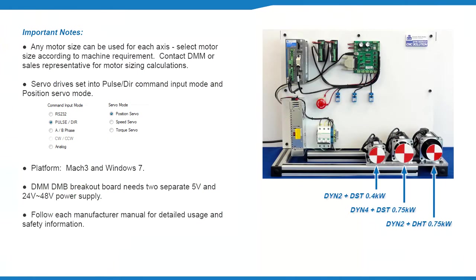Any motor size can be used for each axis and the user should select this according to their machine requirement. In this video, we will be using a 3-axis system with 1 DYN4 and 2 DYN2 servo drive axes. Make sure all servo drives are set into pulse direction command input mode and position servo mode. We will be using Windows 7 platform and Mach 3 as the CNC controller.